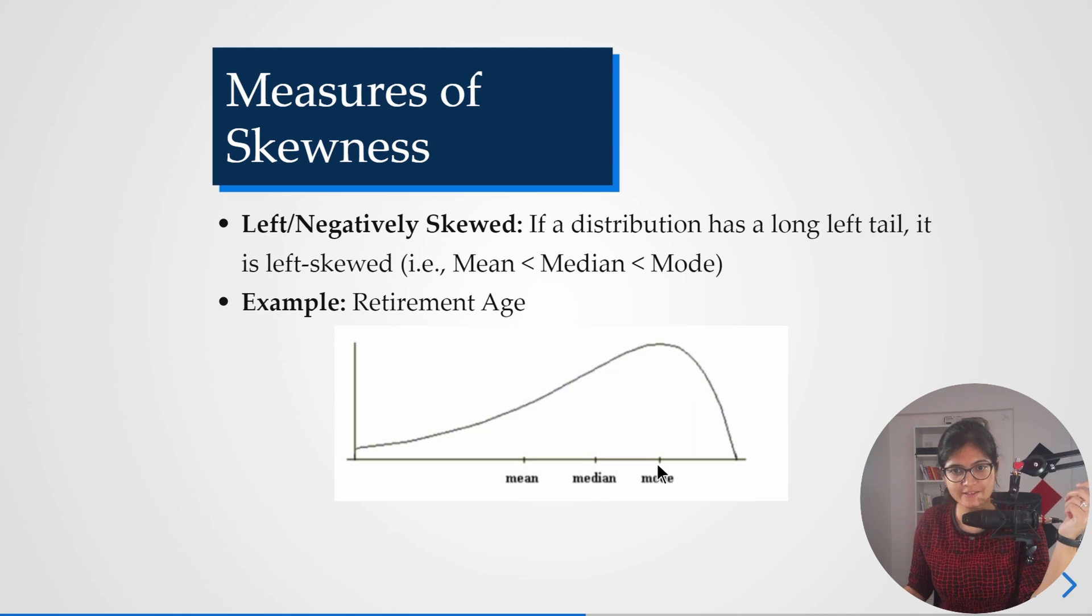Whenever I'm talking about left skew, the highest frequency is what we always call mode. Median is the middle value, and mean is the average of all. Here you can see clearly that the mode is having a very higher value, then comes median, and then comes the mean value.